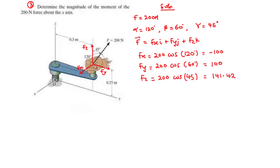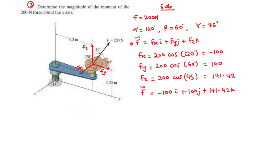We can substitute all these values in, and the force represented as a Cartesian vector is negative 100i plus 100j plus 141.42k. Now, in the question we are asked to find the moment of the force about the x-axis. The moment of the force about the x-axis is given by the dot product of the unit vector directed along the x-axis and the cross product of r and F.